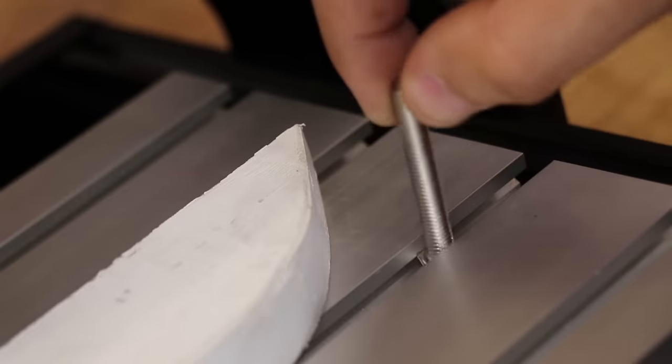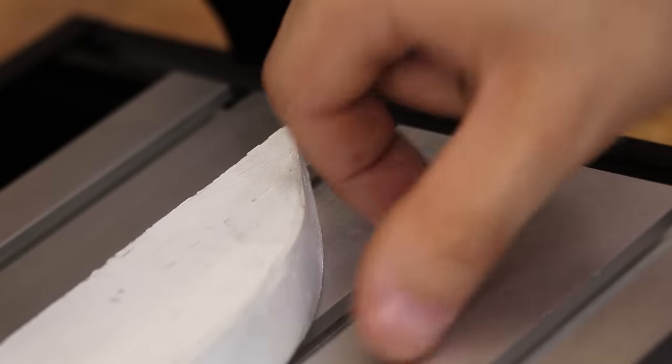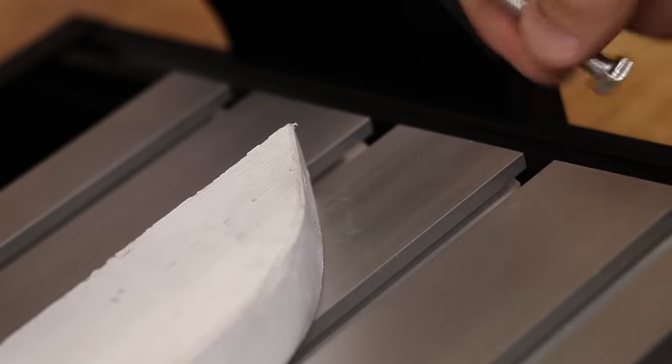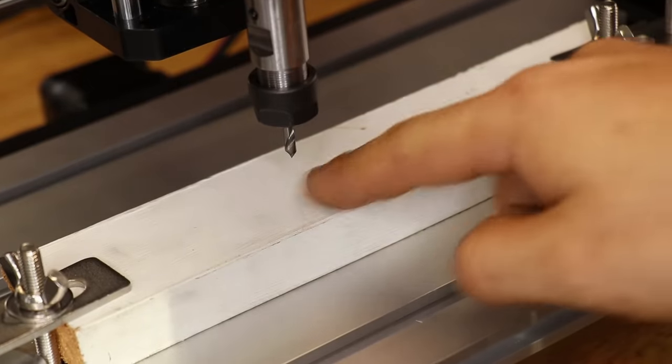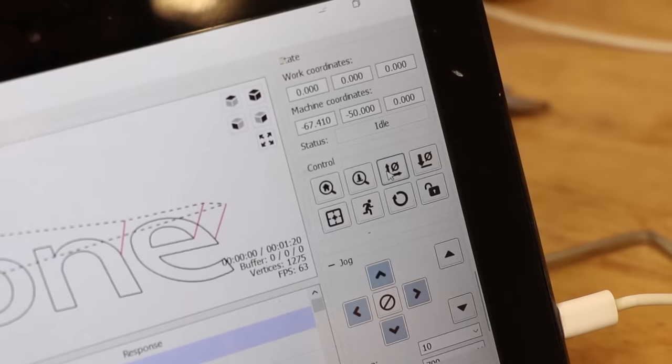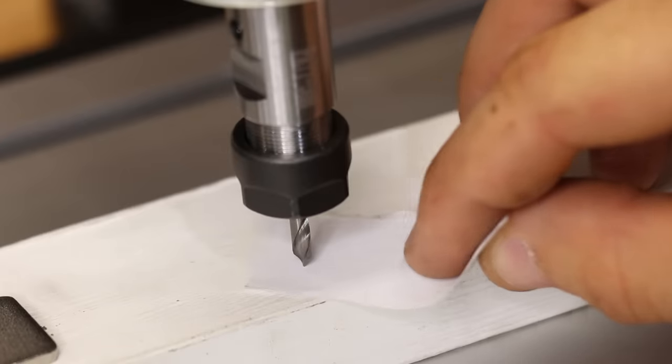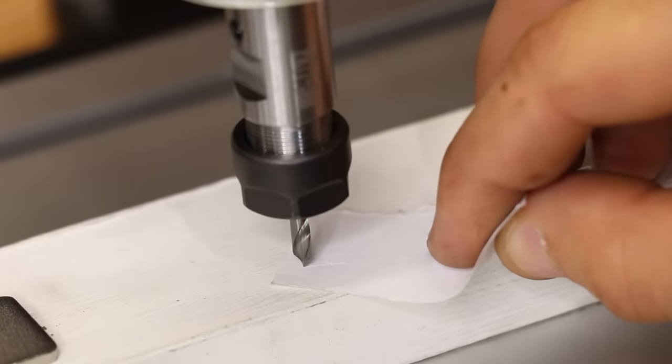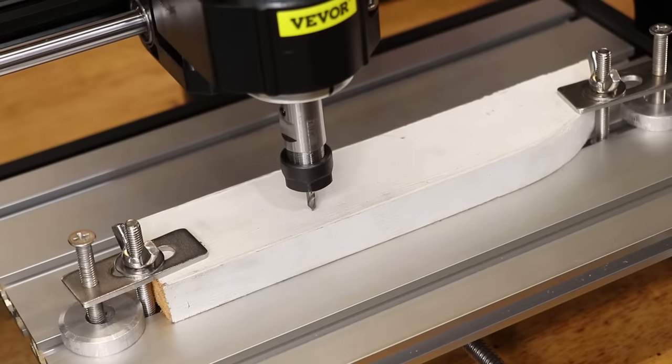After using this once I can tell you that the first thing I'll be replacing will be the clamp down kit - the bolts just too small for the slot and it's not that nice to use. I'll move the bit over to where I want the work to start and I'll set the origin on the PC, and I'll also set the Z origin. Finally I'll click go.